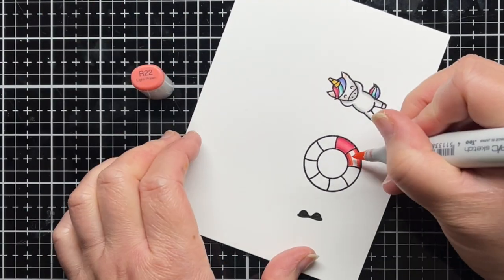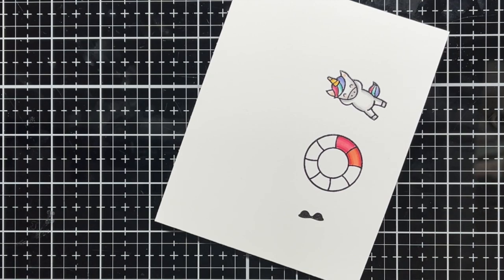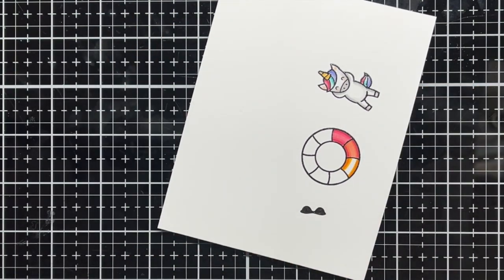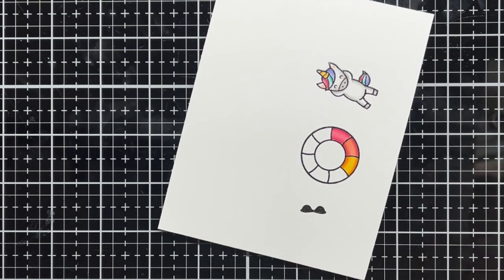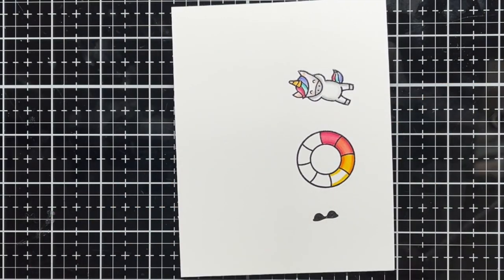Once I'm done coloring I die cut all the images with the coordinating dies. Off camera I also stamp the speech bubble and a happy birthday sentiment from the same set and die cut it with the coordinating die.